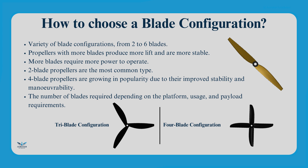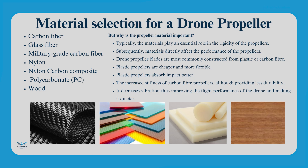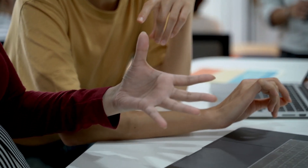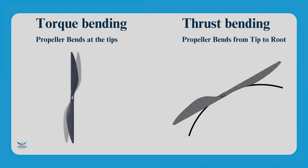Blade configuration: drone propellers come in a variety of blade configurations from 2 to 6 blades. In general, propellers with more blades produce more lift and are more stable, but also require more power to operate. Materials used: the material of the propeller affects its performance. Common materials include carbon fiber, glass fiber, military grade carbon fiber, nylon, nylon carbon composite, polycarbonate (PC) and wood. Plastic propellers are cheaper and more flexible, absorbing impact better. Carbon fiber propellers are stiffer and less durable, but reduce vibration and improve flight performance, making the drone quieter. Drone propellers experience two major bending forces: torque bending — as the motor turns the propeller, resistance from the air creates a bending force that affects the efficiency of rotation; and thrust bending — the force generated by lift bends the propeller upwards, and stronger materials help counteract this effect.